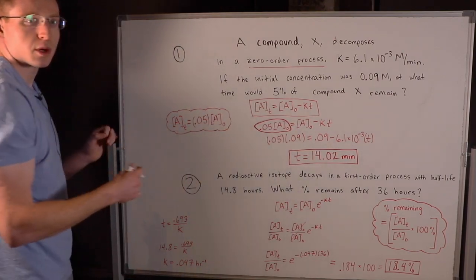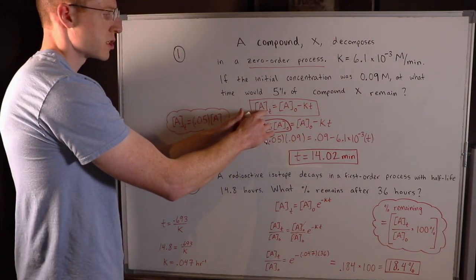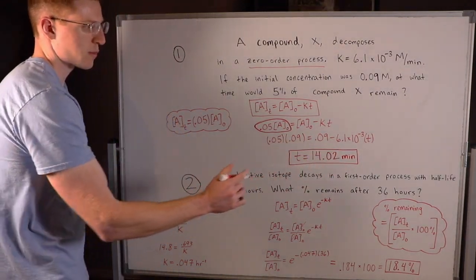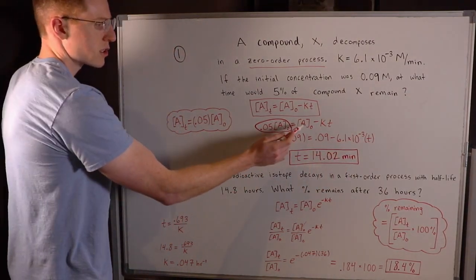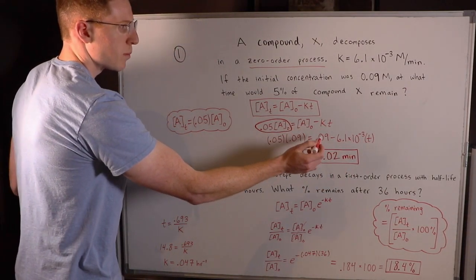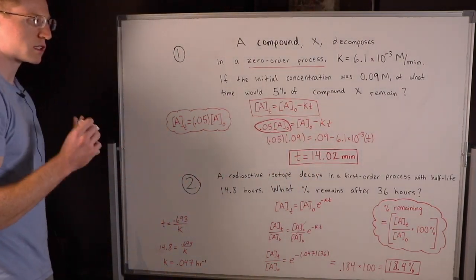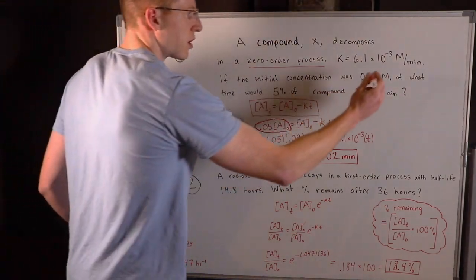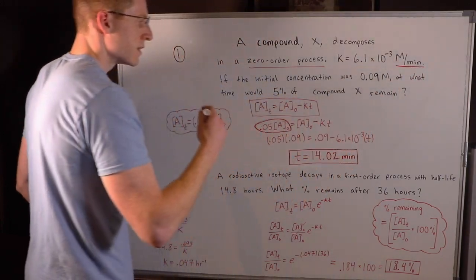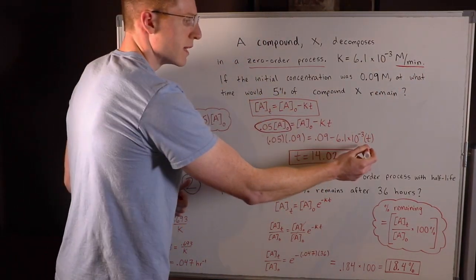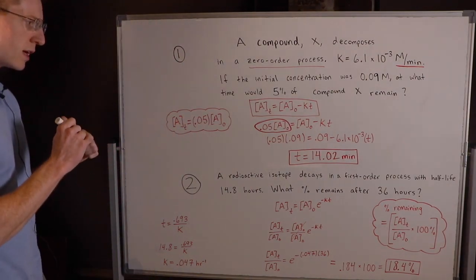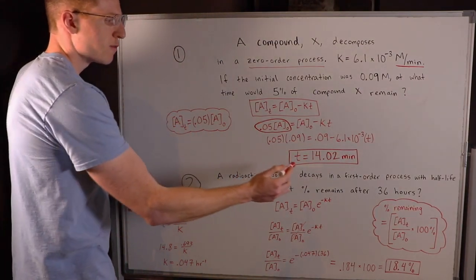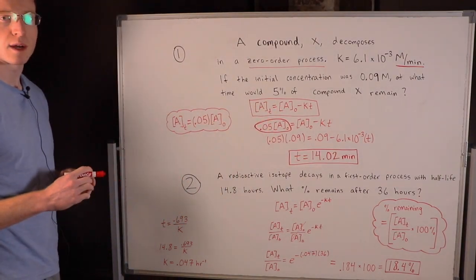I simply substitute in all the other variables except for time because that's what I'm solving for. I started out A₀ with 0.09 molar, and they gave us K = 6.1 × 10⁻³ molar per minute. Notice they gave us K in molarity per minute, which means our time is going to be in minutes. You have to make sure those units match. This is simply an algebra problem from here. You isolate T and find that at 14.02 minutes, 5% of compound X would remain.